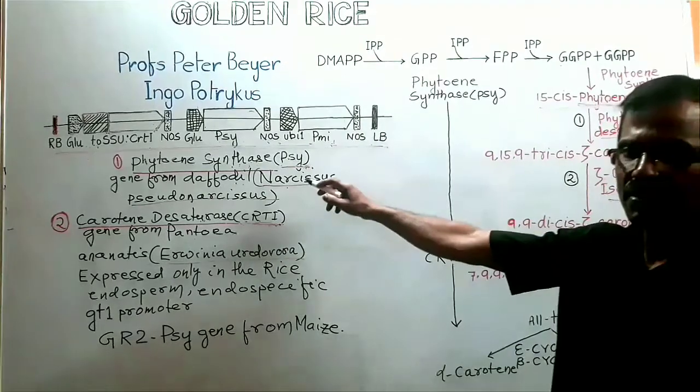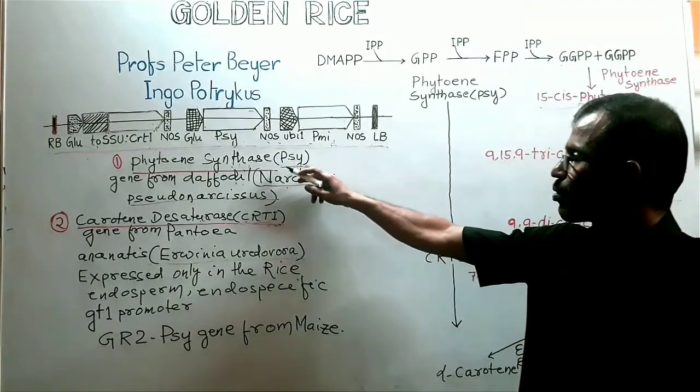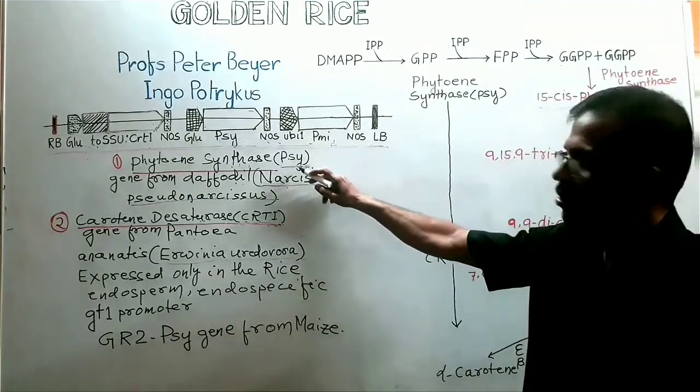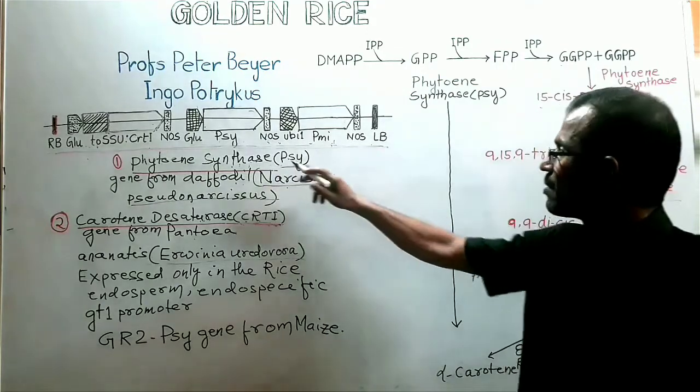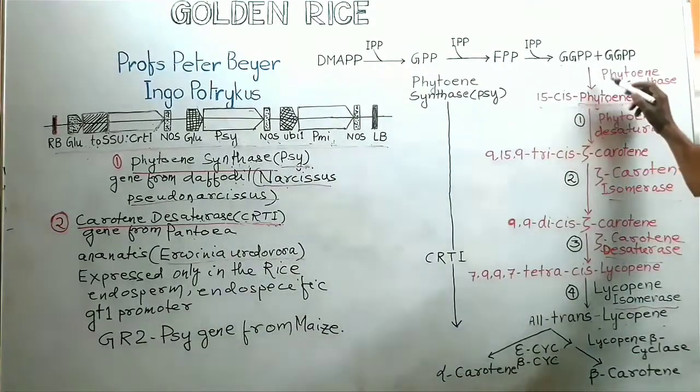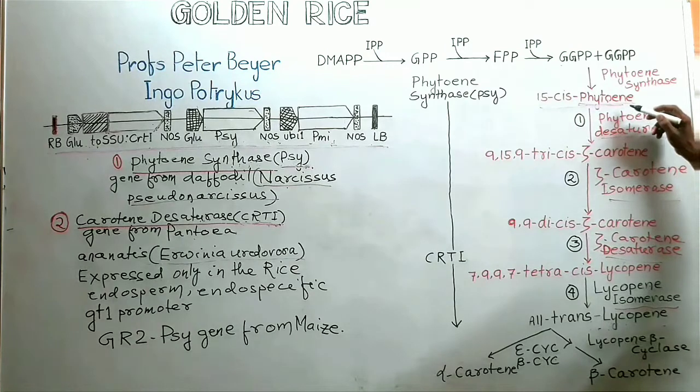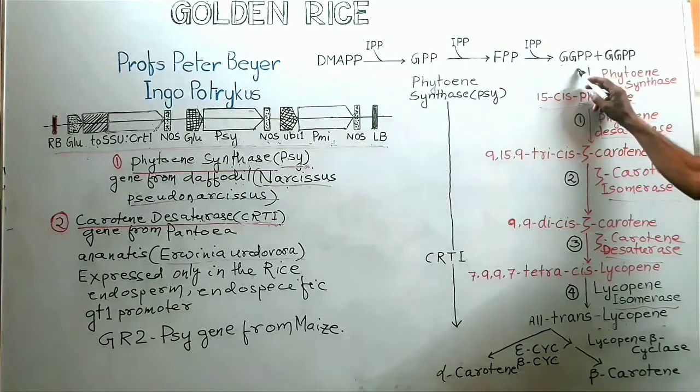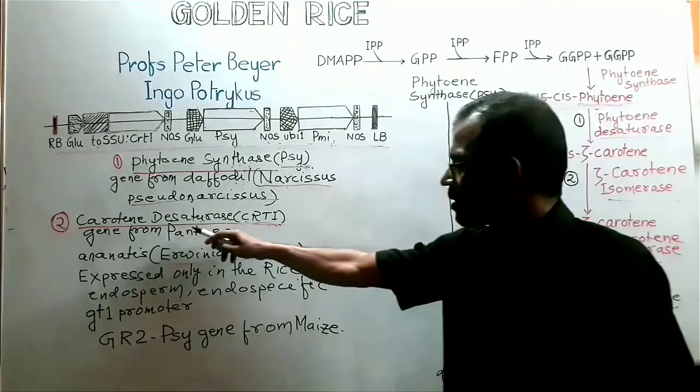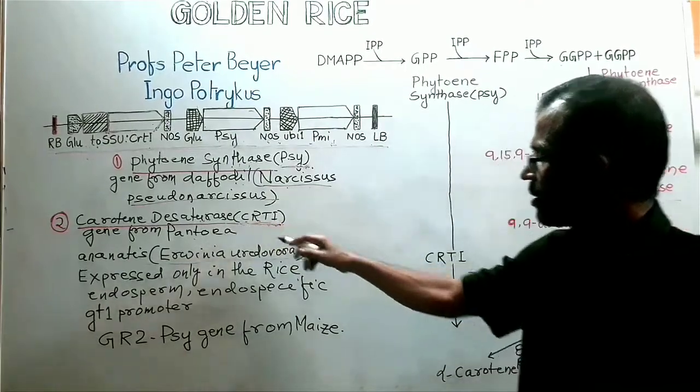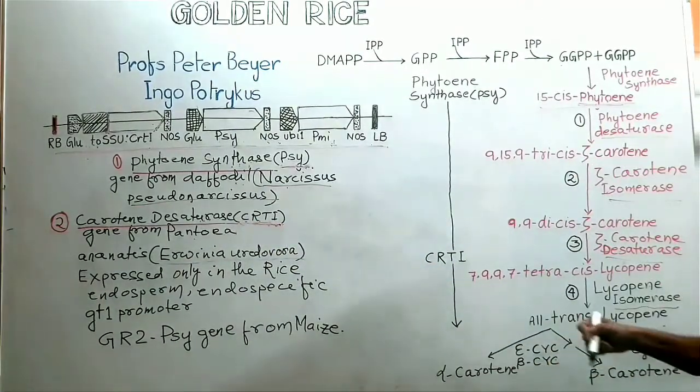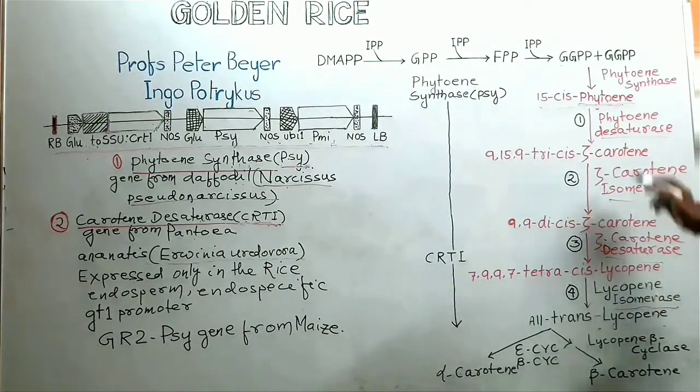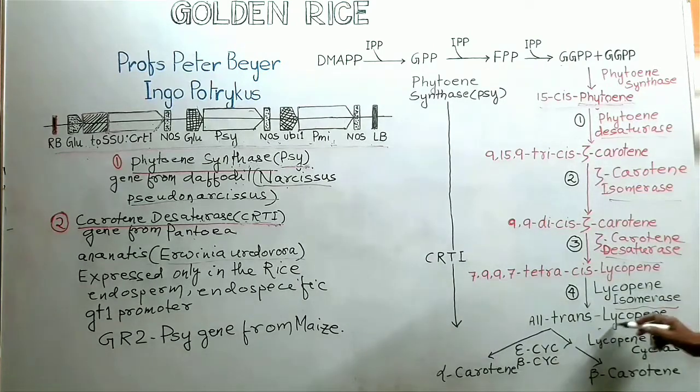So phytoene synthase is one enzyme that is coded by PSY gene. What is the function of phytoene synthase? Phytoene synthase catalyzes the synthesis of phytoene from geranylgeranyl pyrophosphate. Second enzyme that is bacterial carotene desaturase, it performs the entire reaction sequence from phytoene to lycopene.